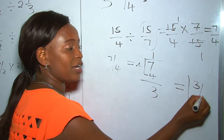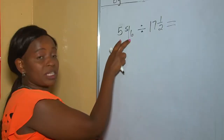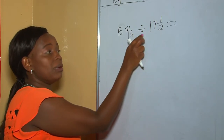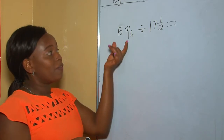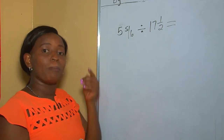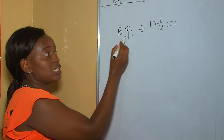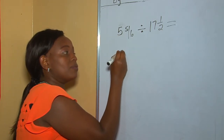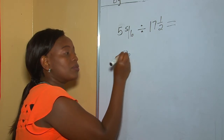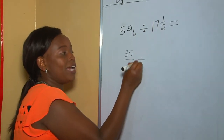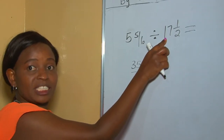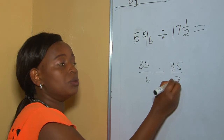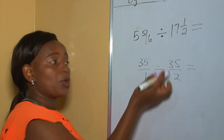These are mixed fractions: mixed fraction divided by mixed fraction. The first step is to convert our mixed fractions to improper fractions. 6 times 5 is 30, 30 plus 5 is 35, all over 6. Divided by: 2 times 17 is 34, 34 plus 1 is 35, over 2.